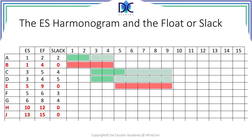Activity F runs from period 5 till 6 with a slack of 3, and activity G from period 6 till 8 with a slack of 4. Finally, the two last activities H and J are on the critical path, so we draw them in red.